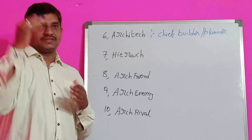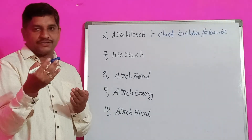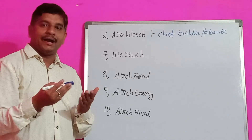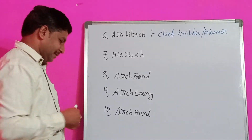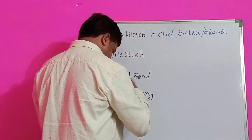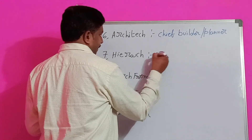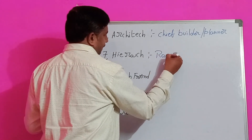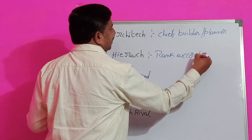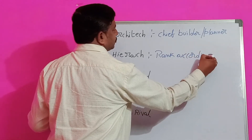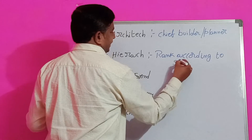Hierarchy. We know very well — in government employees there are hierarchies: officer, upper division clerk, LDC, and attendant. This system is called hierarchy. Hierarchy means rank according to status.